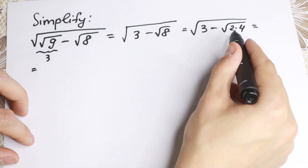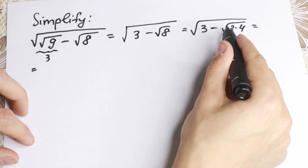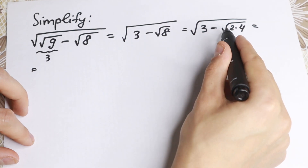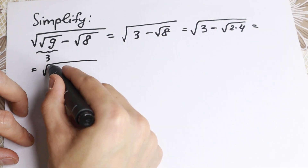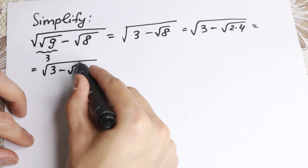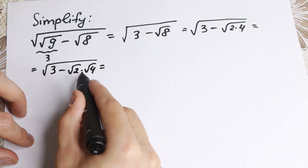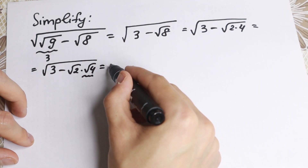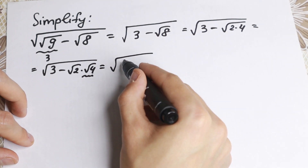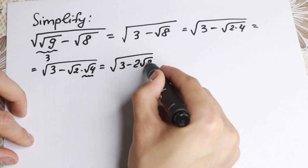If you know a little about this property: if we have a square root of a product, we can write it as a product of square roots. So as a result we get square root of 3 minus square root of 2 times square root of 4. And of course square root of 4 equals 2, so the result is square root of 3 minus 2 times square root of 2.